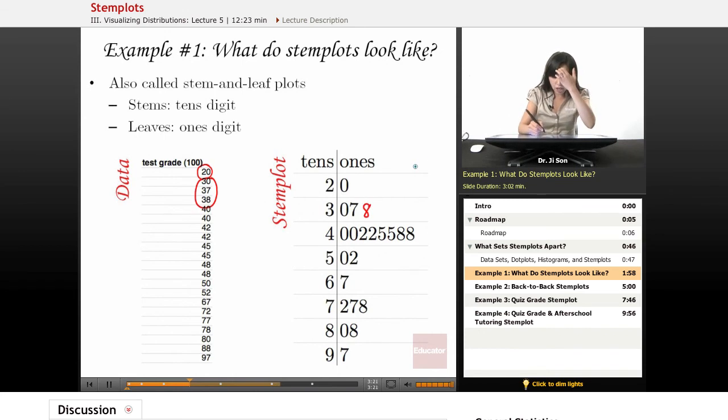Now let's look at all those people who scored in the 40s, which looks like this is the majority. So I would put the zero, the zero, the two, the two, the five, the five, the eight, and the eight.